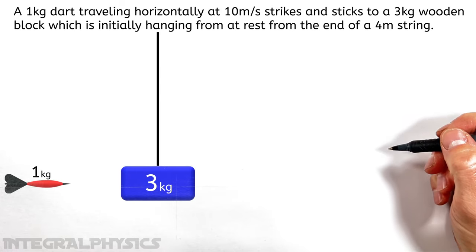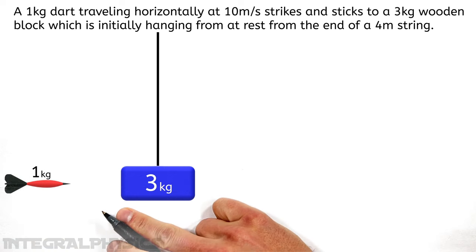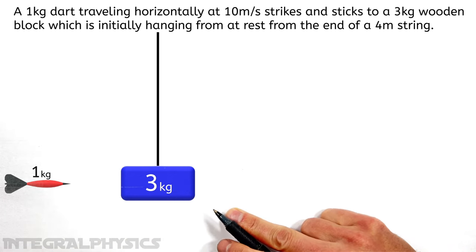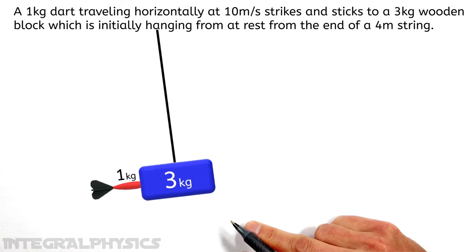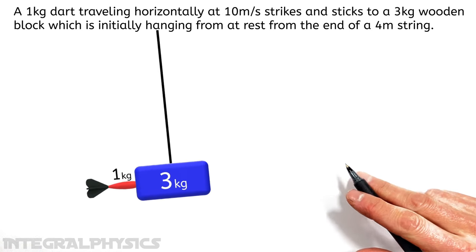Alright, today we're taking a look at what in physics is referred to as a ballistic pendulum, which consists of a projectile, in this case a dart, that's fired horizontally into a block on the end of a string. And when this dart collides with the block, it's going to stick in the block and the two objects are going to swing upward on the end of this string.